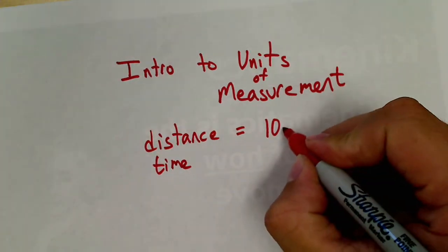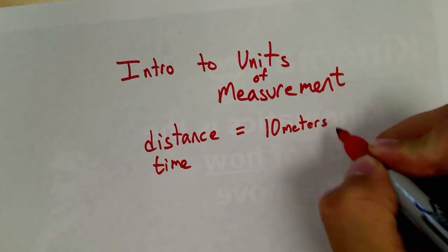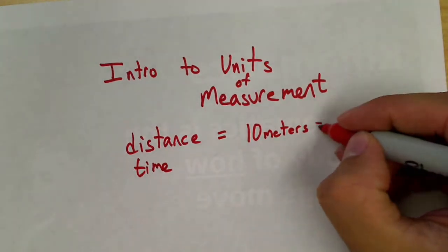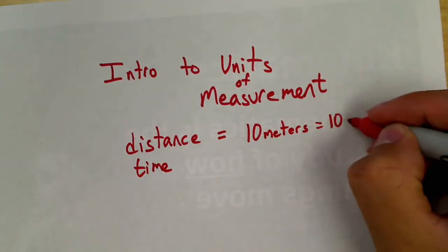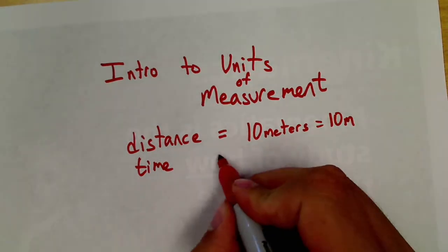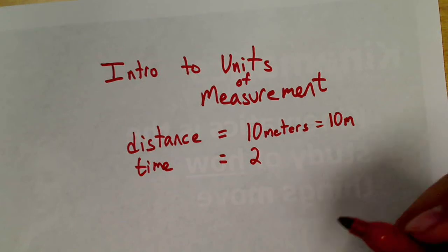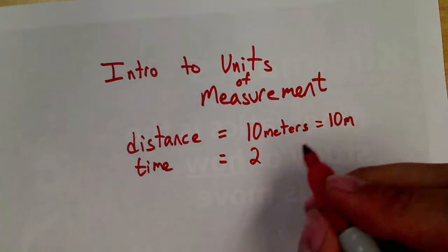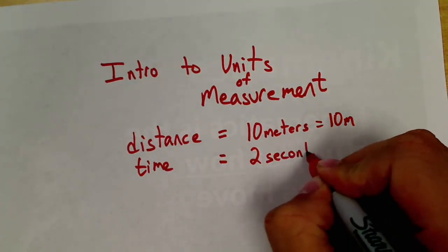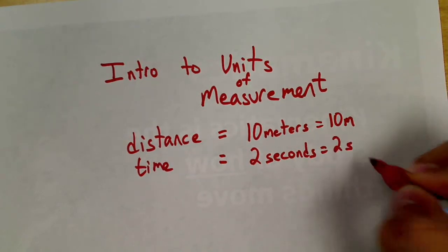Our most common unit, our SI unit here in physics, using the metric system, would be 10 meters — we'll abbreviate that 10m. For time, our SI unit, say you might do 2 — but 2 what? 2 seconds. We'll just use an S.